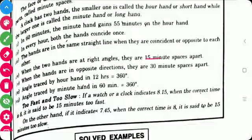Fifth is, when the hands are in opposite direction, they are 30 minutes spaces apart. These things are known to us.